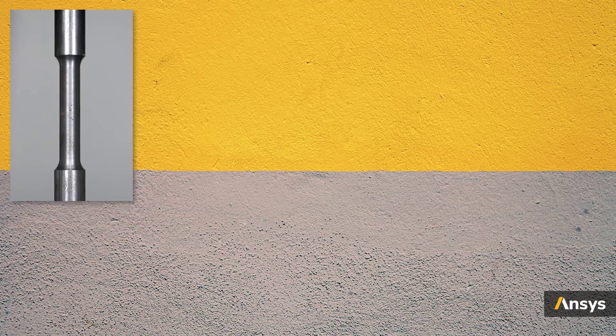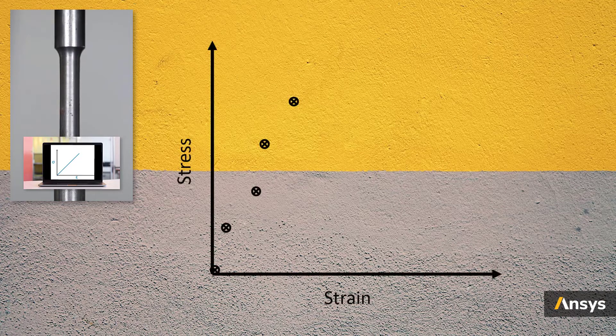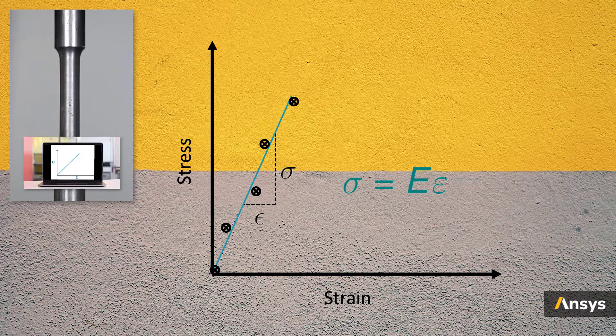For instance, in case of metals, we perform a simple uniaxial tension test on a dog bone coupon, and once we get the data points for stress versus strain, we fit a straight line to this data, which gives us a slope and the x-intercept. Since the material usually has zero stress at zero deformation, the x-intercept is just zero, so we are left with calculating just the slope, which is nothing but the Young's modulus of the material.